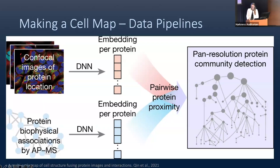The way that these cell maps are created is by performing unsupervised clustering on a graph of protein-protein interaction data. The graph is created from a multimodal set of immunofluorescence and mass spec data. After the raw data go through a single layer of embeddings per protein, they create a graph of protein proximities — or distances between proteins within a cell.